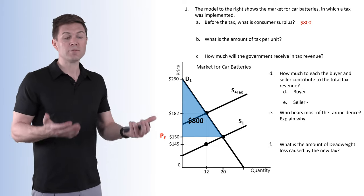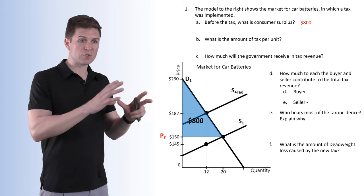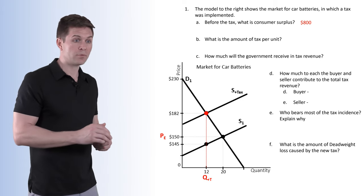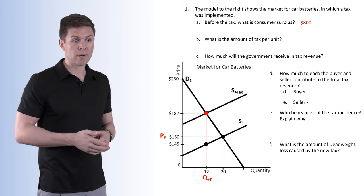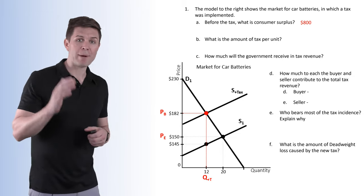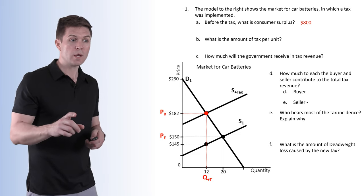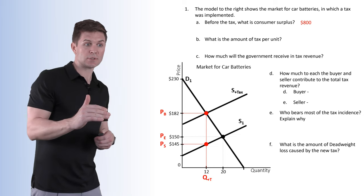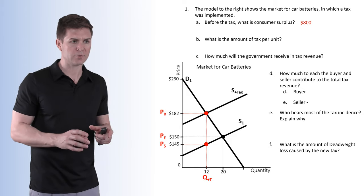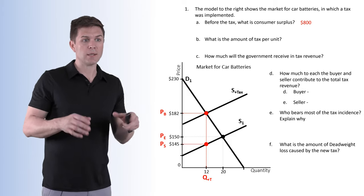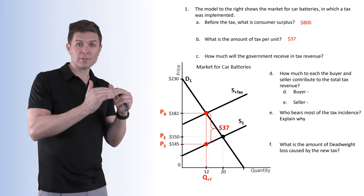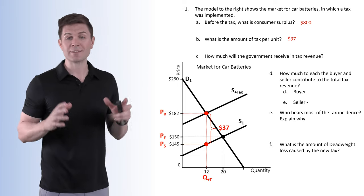Part B asks: what is the amount of tax per unit? Our new equilibrium with the tax — our supply-plus-tax curve — is right there at $182. Our equilibrium quantity with the tax is going to be at 12 units. The price that the buyer pays is going to be $182, and the price that the seller is going to receive is going to be $145. So the difference between the two supply curves represents our tax. That's $37.